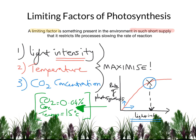At point X, light intensity is no longer limiting anything — another factor has become limiting. So what you need to do is now change one of the other two things: CO2 or temperature. You might be asked to draw a curve on the same graph to predict what would happen if the CO2 concentration was increased from 0.04% to, say, 0.14%. Drawing this as a dashed line, the graph has the same shape, but because we've increased the CO2 concentration, overall photosynthesis is just that bit more effective.